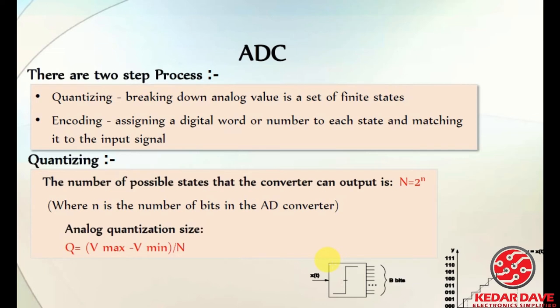Here you can see the ADC — analog to digital conversion — which is a two-step process. The first step is quantizing. Quantizing is nothing but breaking down an analog value into a set of finite states, assigning a lower generic code to each particular state.